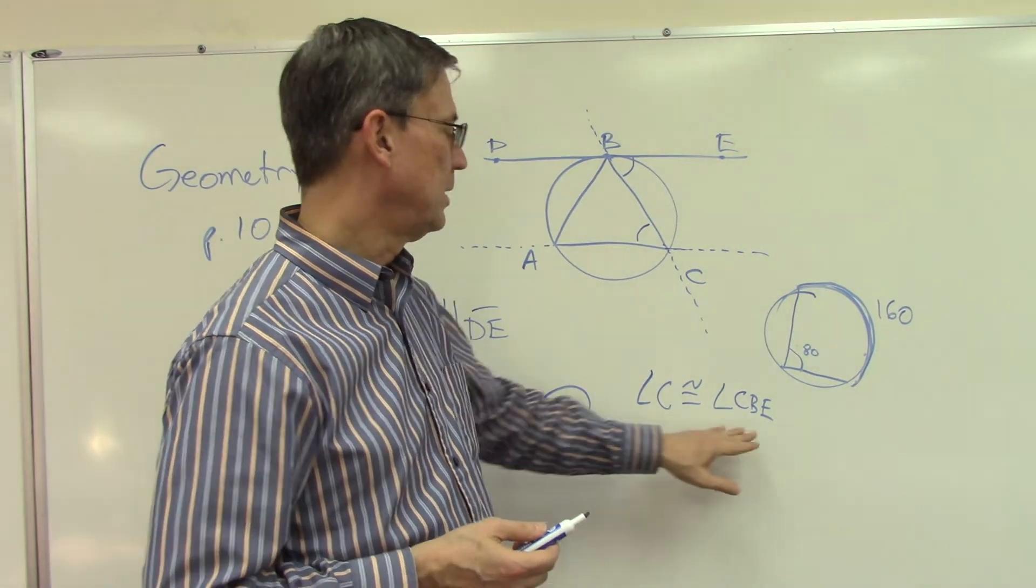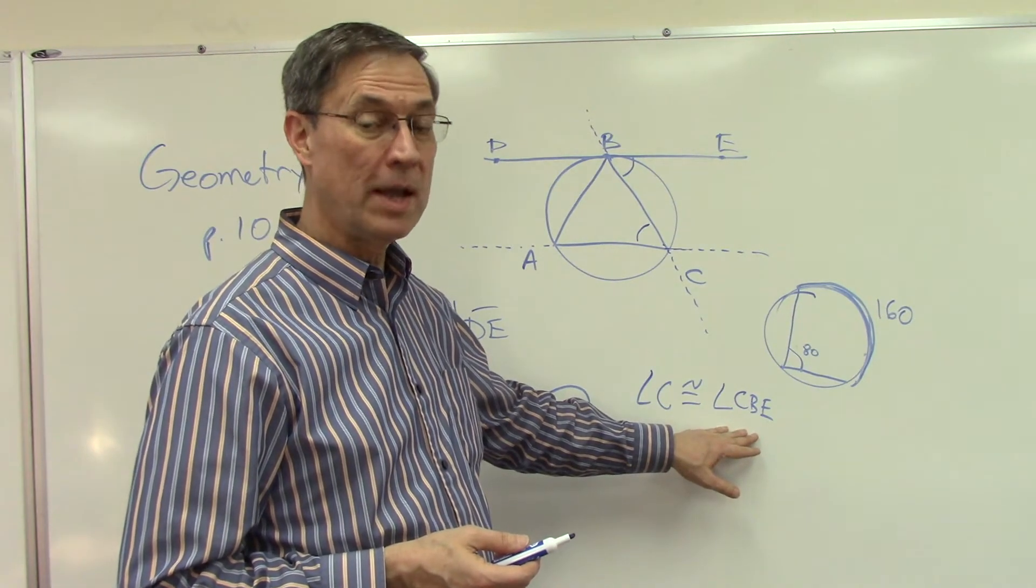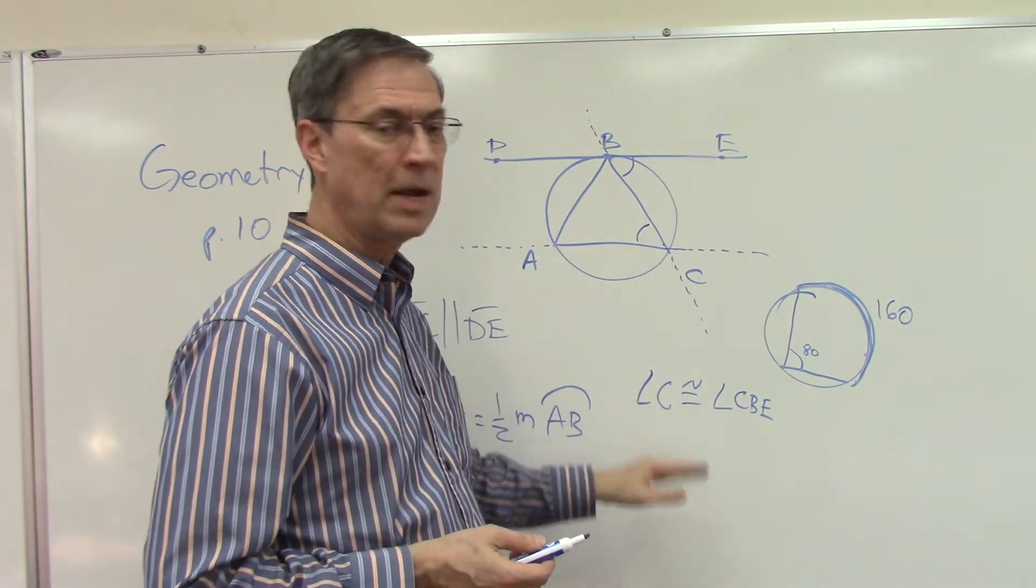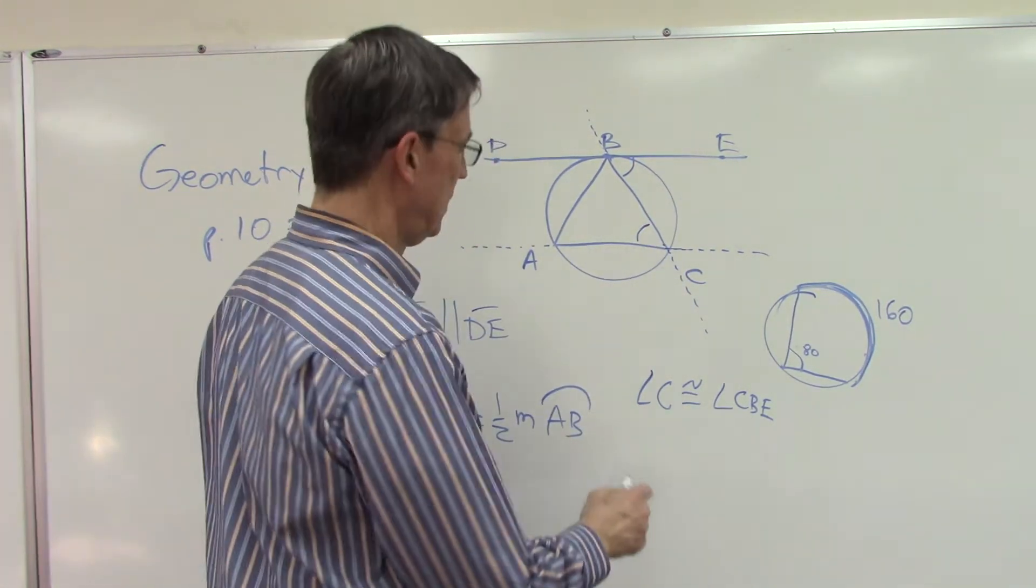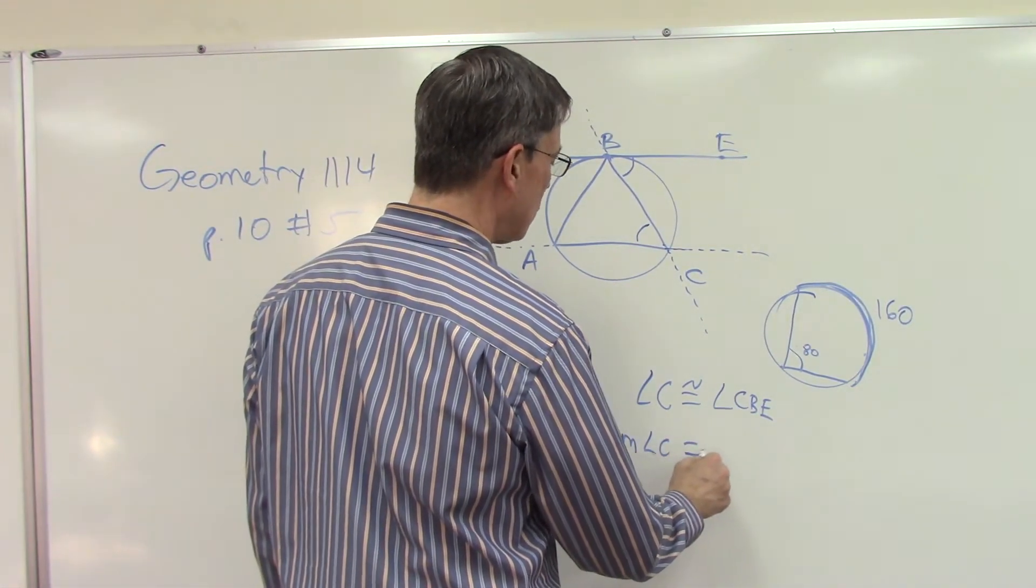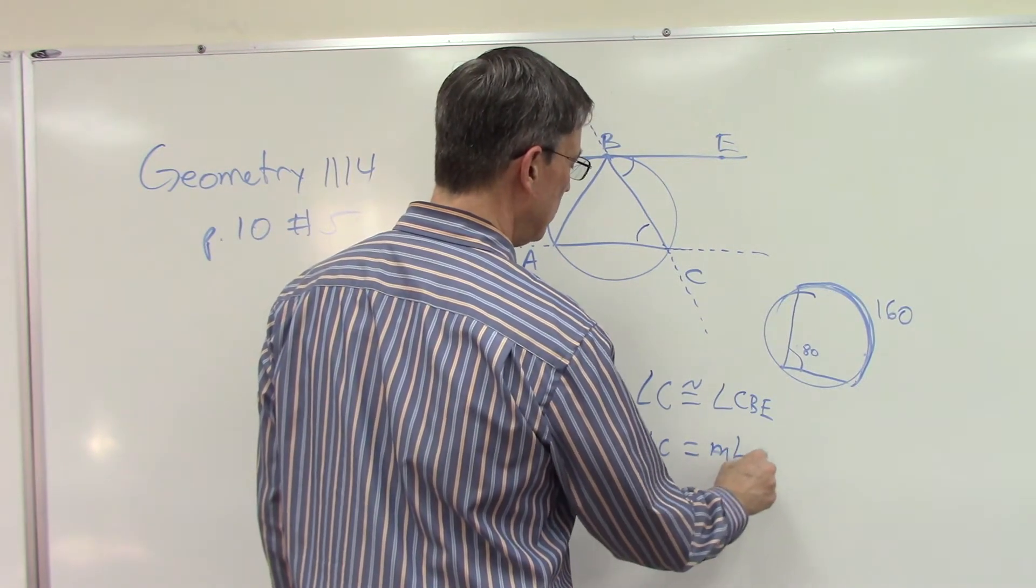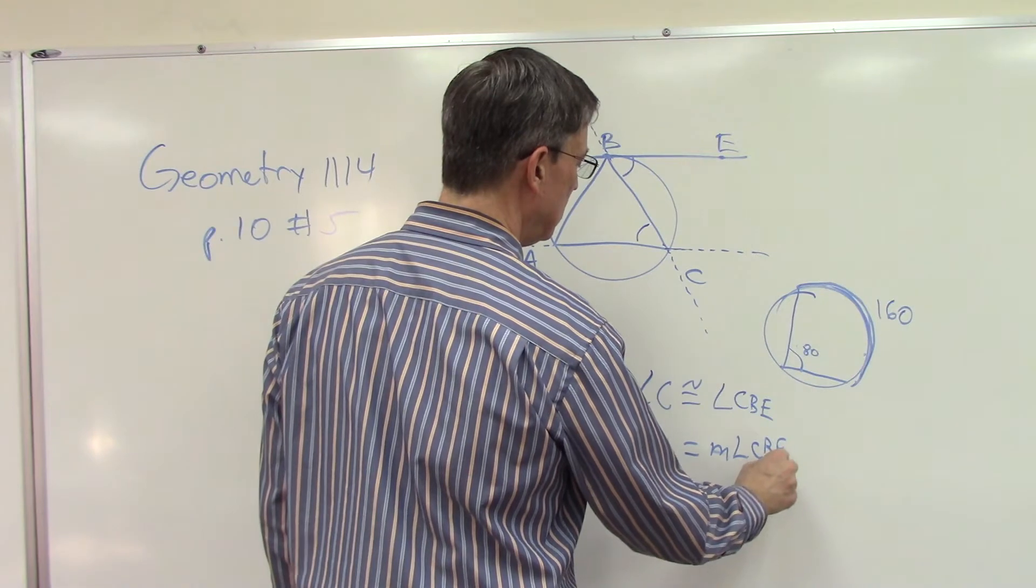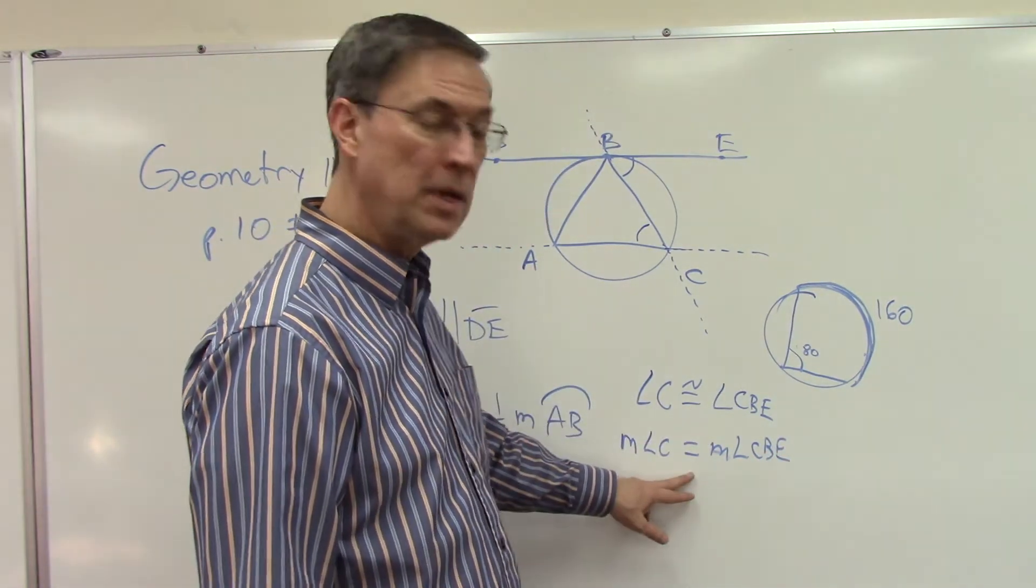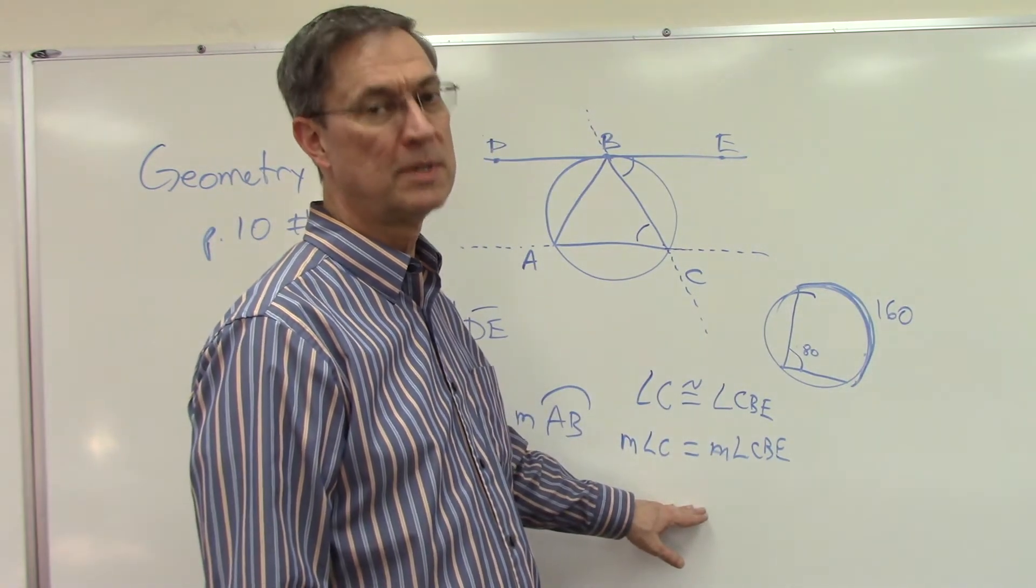But that's not the same as saying that the measures are equal. This represents the geometric figure itself, the actual drawing, saying that this is exactly the same size as this. But then we have to actually write it as the measure of angle C is equal to the measure of angle CBE. And if they're congruent, then it makes sense that the measures are equal, but we have to state that as two separate statements.